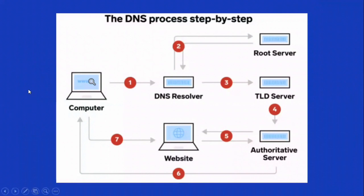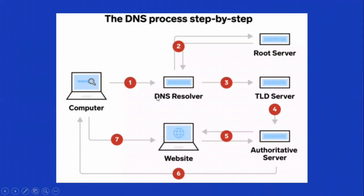So when you are entering a URL, what we are actually telling the computer is to find and connect to another IP address. To do this, it uses a set of related servers, and all those servers together form a DNS system. There are four DNS servers: first is the DNS recursive resolver, the root name server, the top level domain server, and the authoritative name server. The root server, TLD server, and authoritative server are all called name servers.